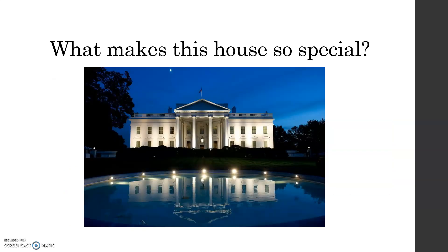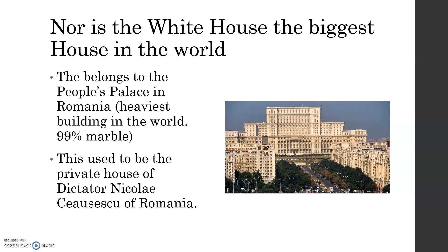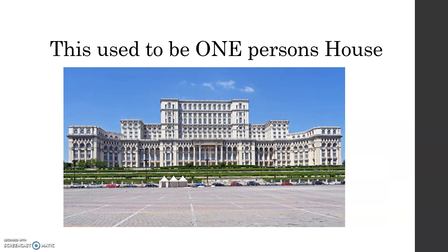The original White House was built in 1800 and then burnt down by the British in the War of 1812 — thanks, James Madison. The only president to not live in a White House of some sort was George Washington. The White House is not the biggest house in the world — that belongs to the People's Palace in Romania, the heaviest building in the world, which is 99% marble and used to be the private home of a dictator named Ceaușescu. Nor is it the most elegant — personally I'd rather live in something like the Ritz-Carlton in Saudi Arabia, which used to be a prison, or the Palace of Versailles.